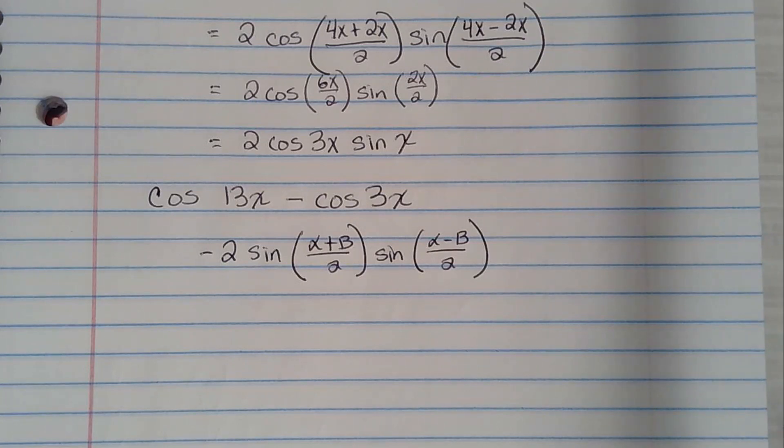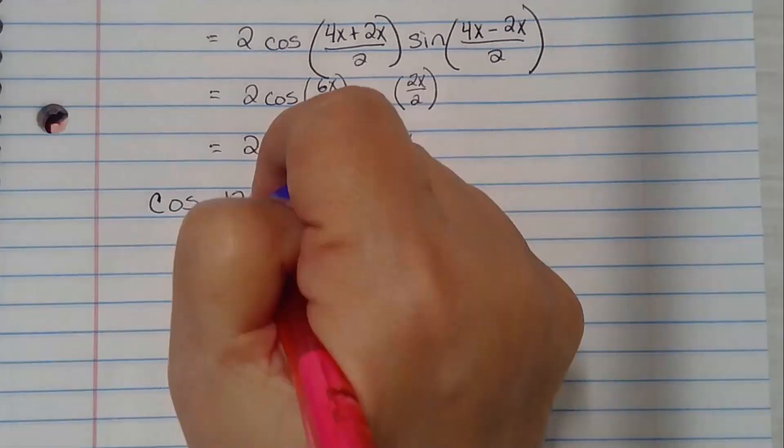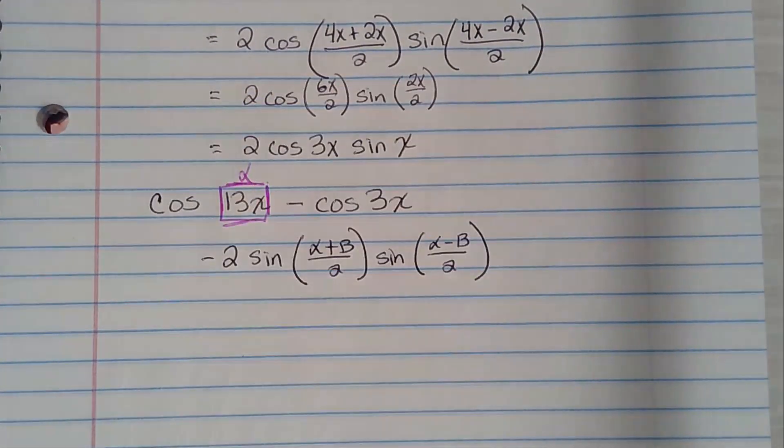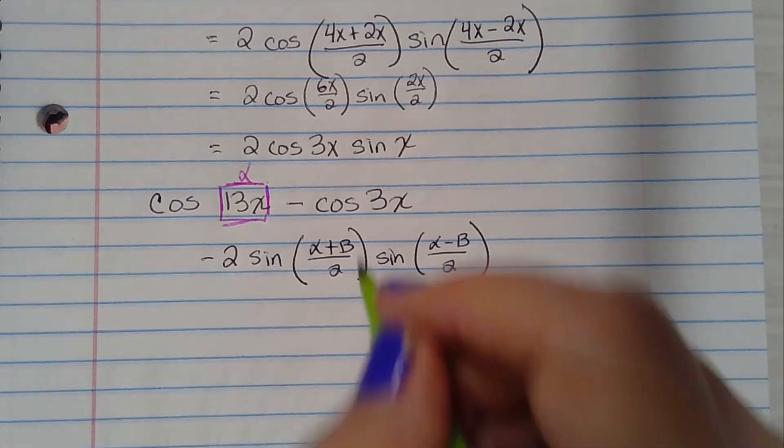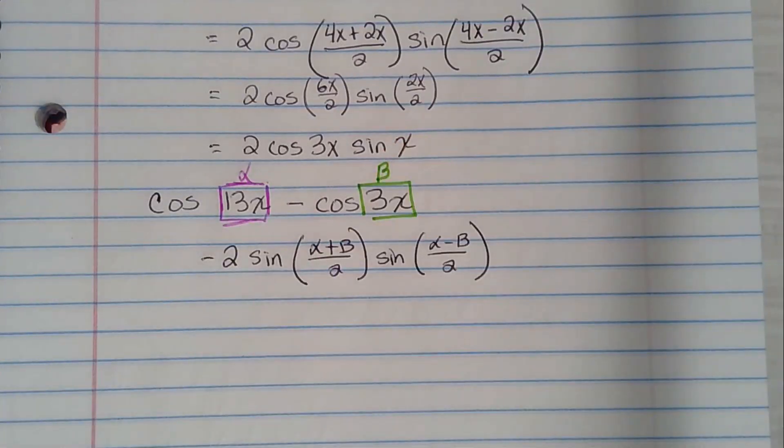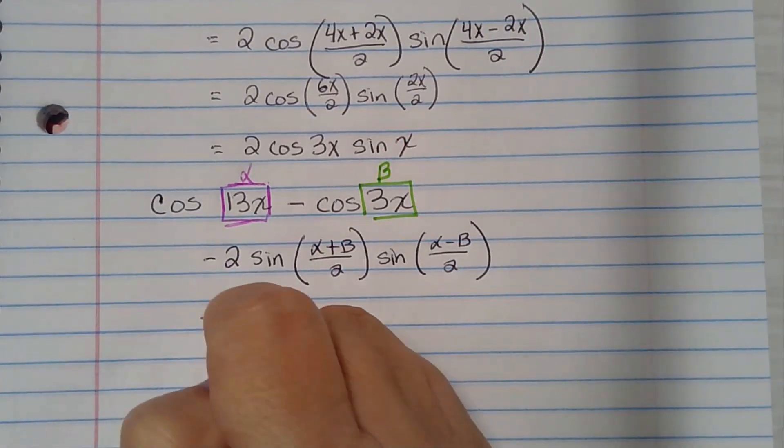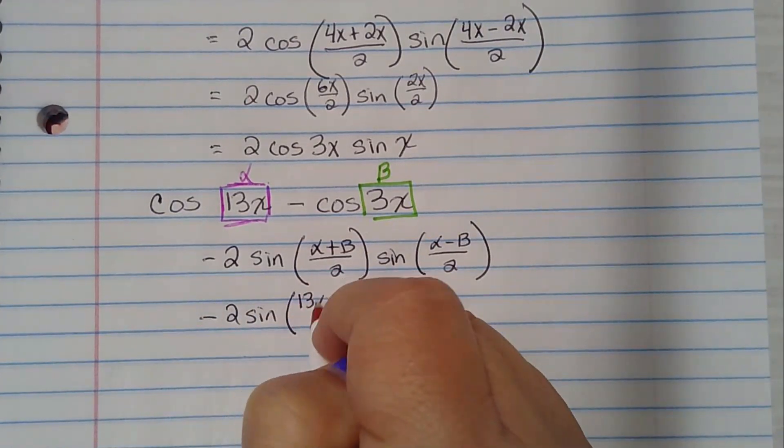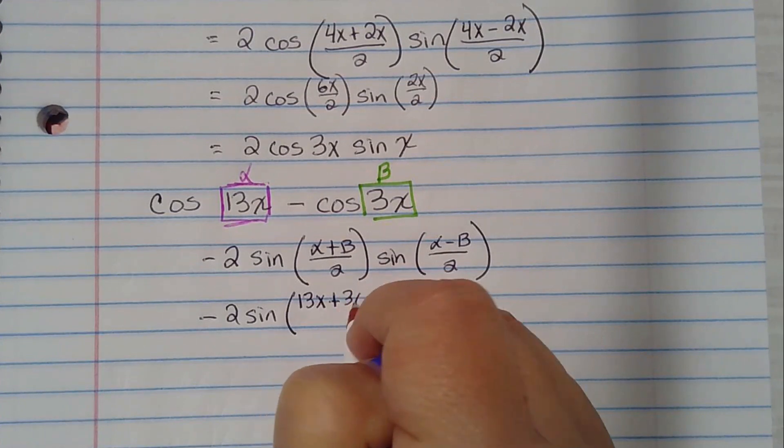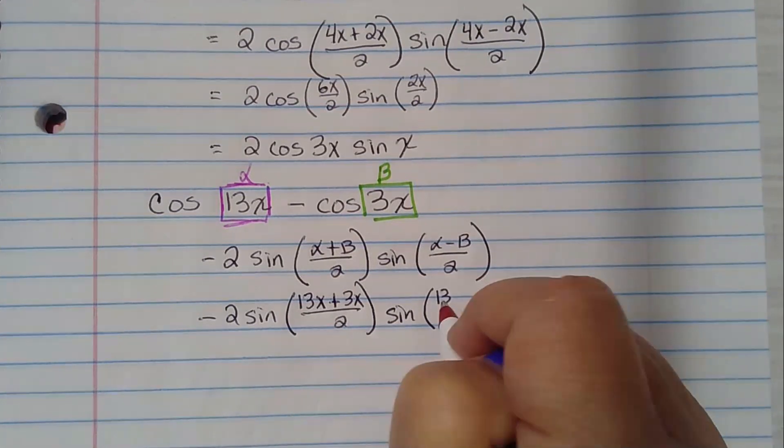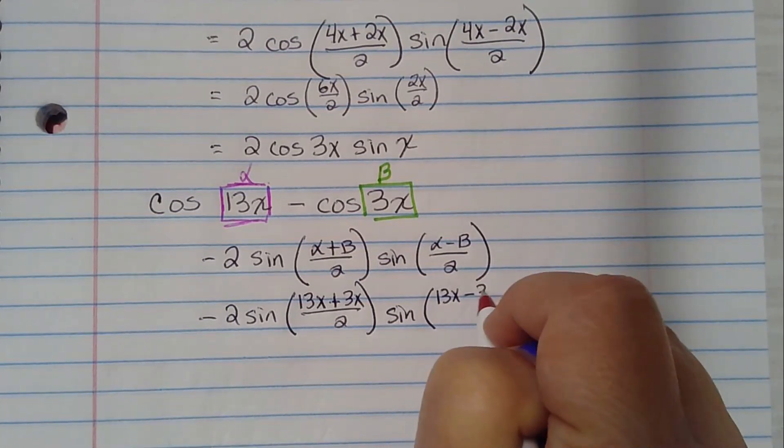All right. What is our alpha this time? 13x is what is alpha. So everywhere there's an alpha, we're going to put 13x. What is our beta? 3x. So everywhere there's a 3x, we're going to put our beta. So minus 2 sine 13x plus 3x over 2. Sine 13x minus 3x over 2.